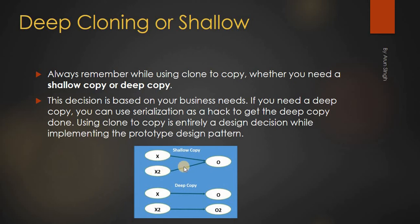When I say shallow copy, basically both variables are pointing to the same object. When I say deep copy, I have variable x pointing to object O, and another variable x2 pointing to a different object O2. O and O2 are different objects. So if I make any change to O, it will only reflect to x but not to x2. In a shallow copy, a change to O will reflect on both x and x2. This is the main difference between shallow copy and deep copy, and depending on our requirement, we select one of them.